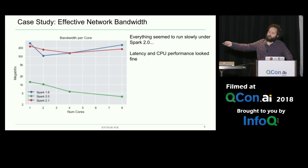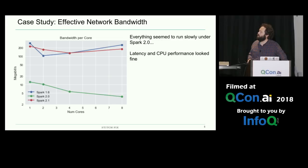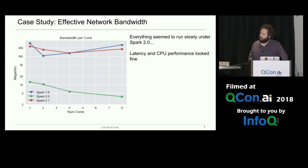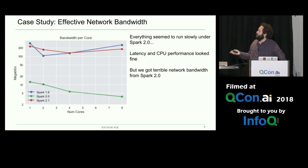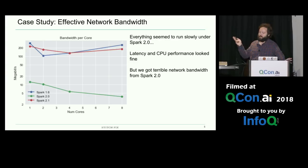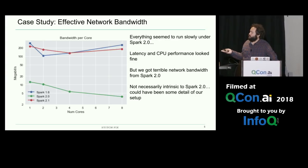This study sprang out of noticing that everything seemed to run slowly whenever people were running under Spark 2.0. We had similar plots for file access latency and CPU performance — those both looked fine. So clearly something was going wrong with the network bandwidth, which we learned by carrying out this study. It looked like something was really wrong with Spark 2.0, something about its implementation that led to this problem.